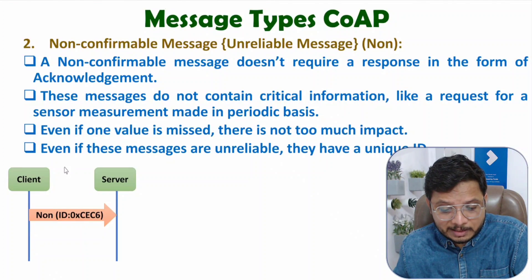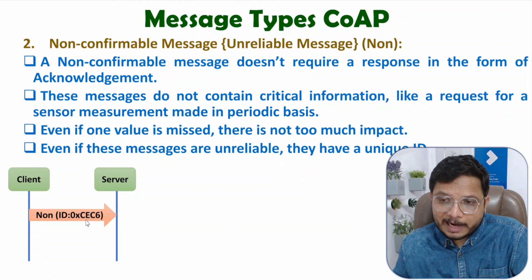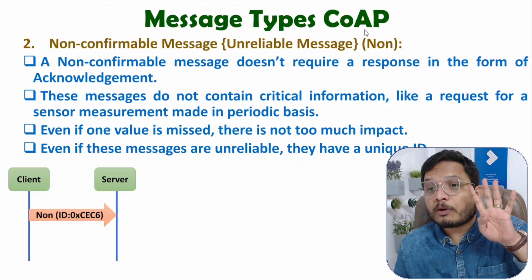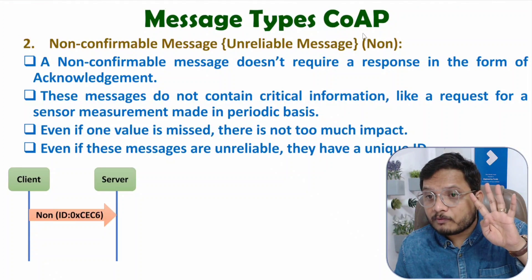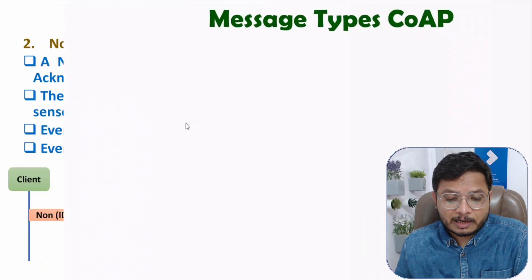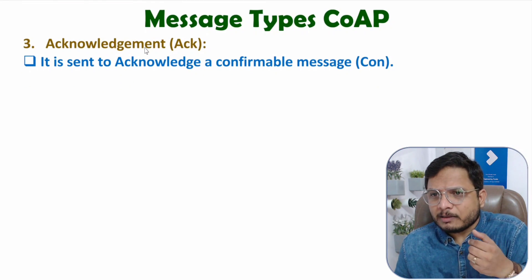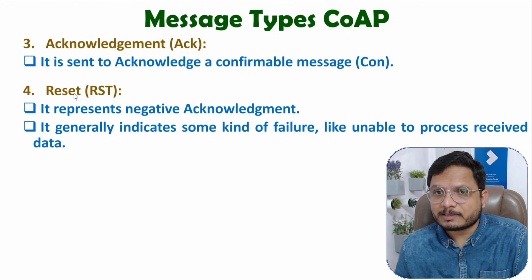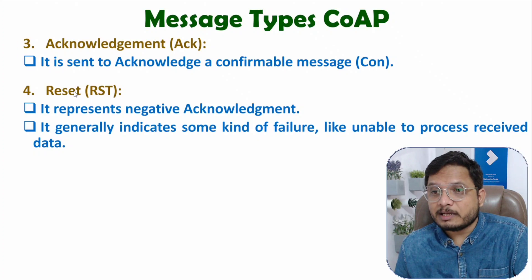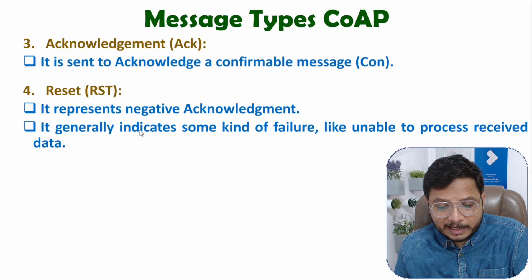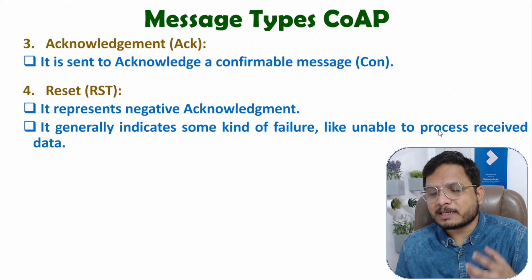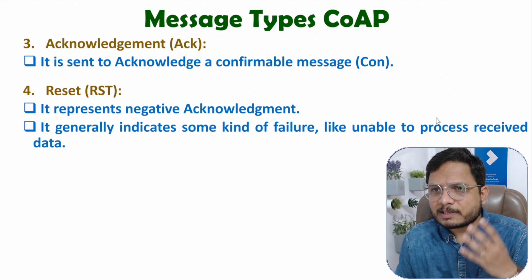Even for non-confirmable messages, there will be a unique 2-byte ID. The header size of a CoAP message is 4 bytes, out of which 2 bytes are used for the message ID or label. The third message type is the Acknowledgement message, which is forwarded in response to a confirmable message. The fourth message type is the Reset message. If the server is not able to retrieve the message, it can forward a Reset message instead of an acknowledgement, generally indicating some kind of failure or that data cannot be retrieved. So those are the four different message types in CoAP protocol.